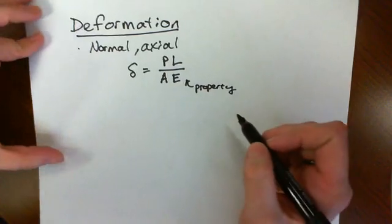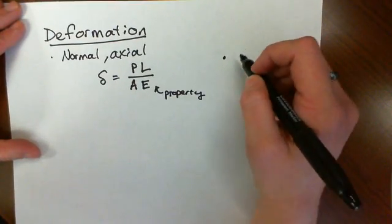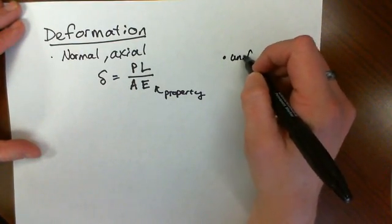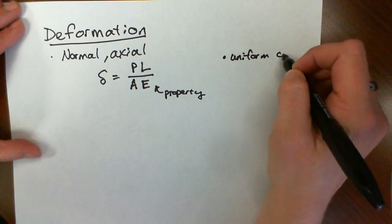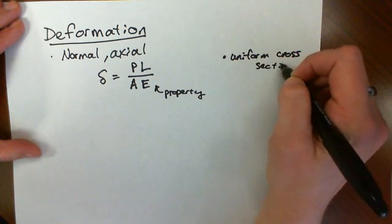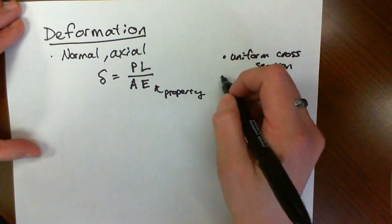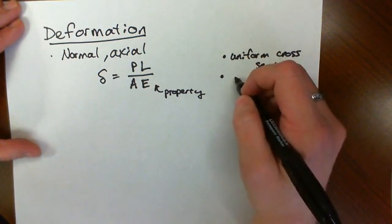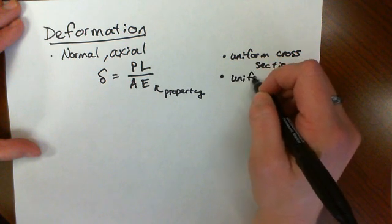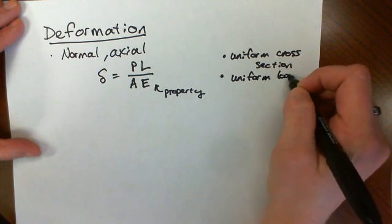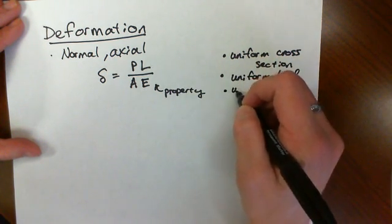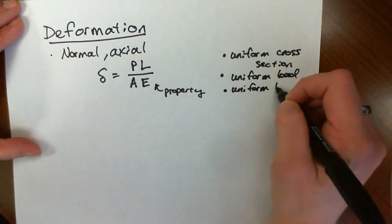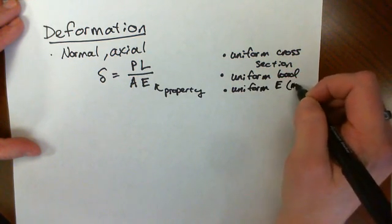This is only true as long as we have a uniform cross-section across the length for the entire length, a uniform load, and a uniform E or material.